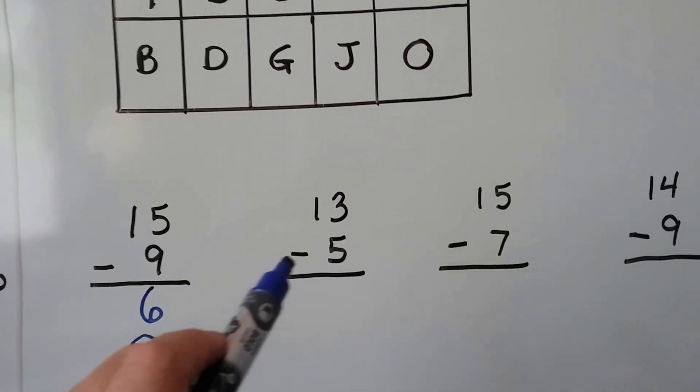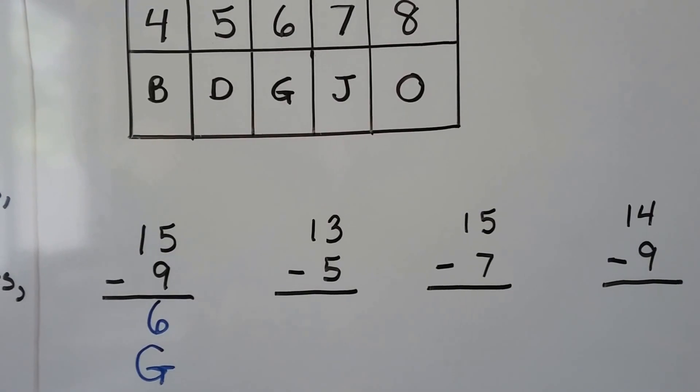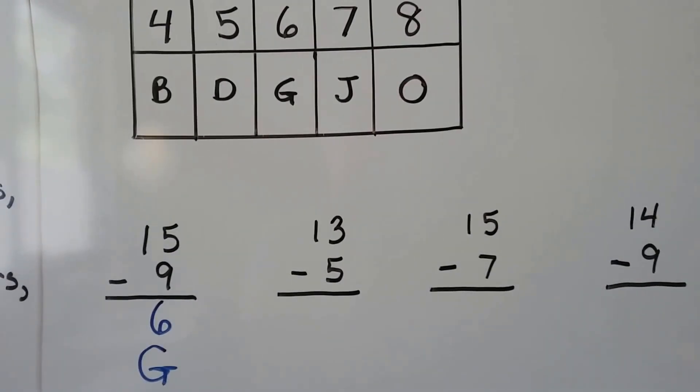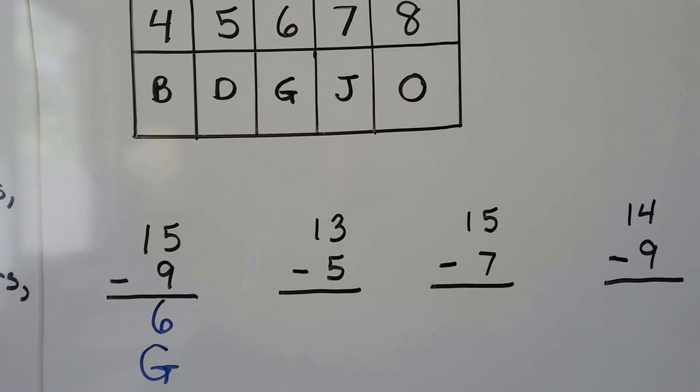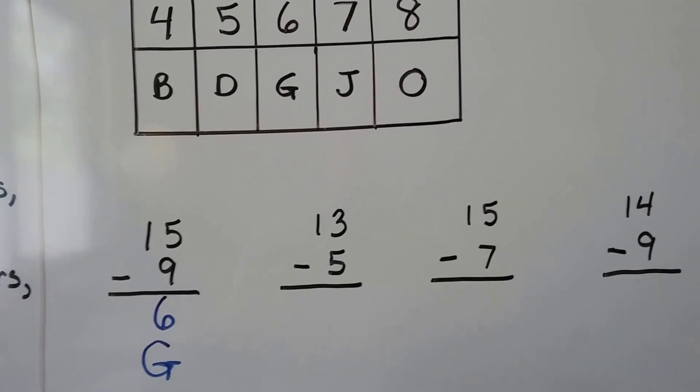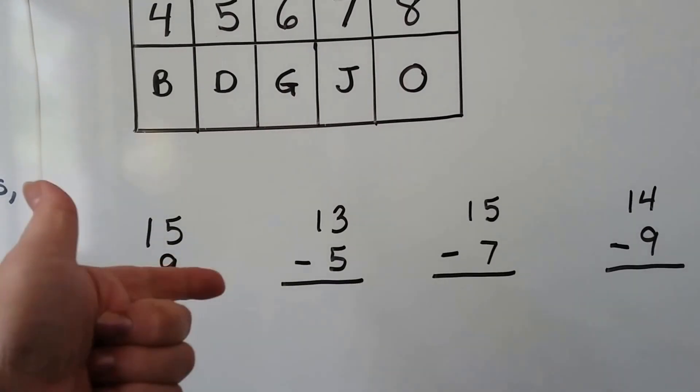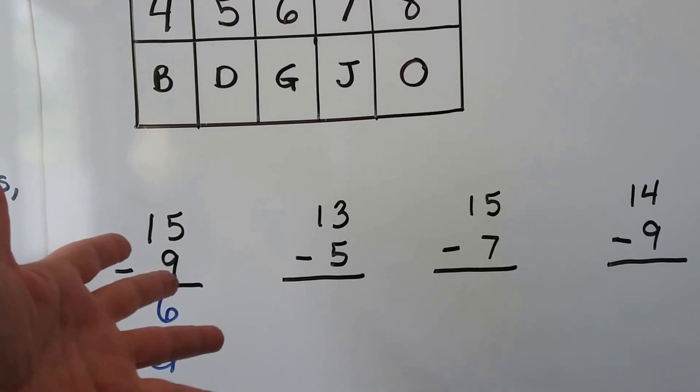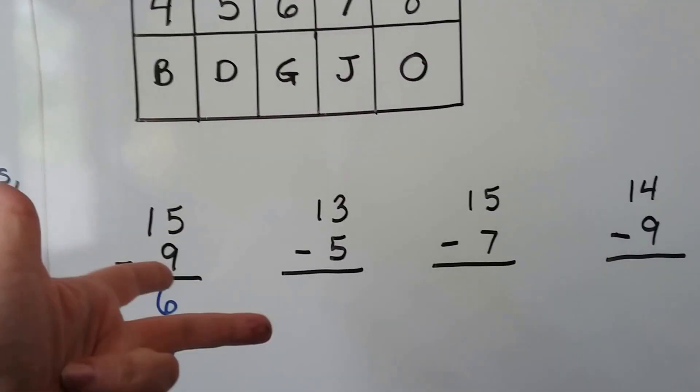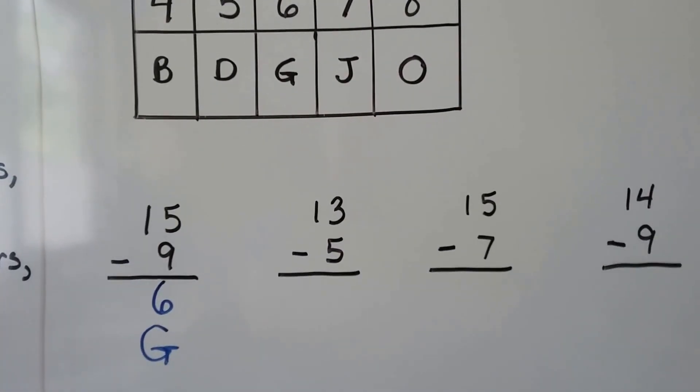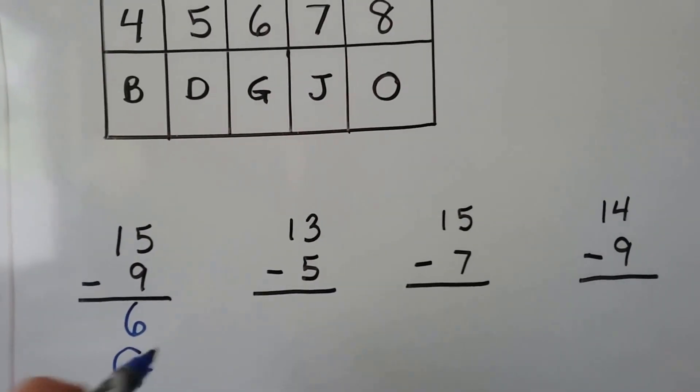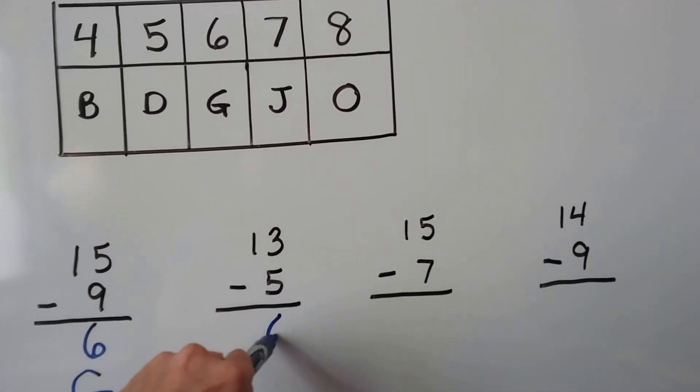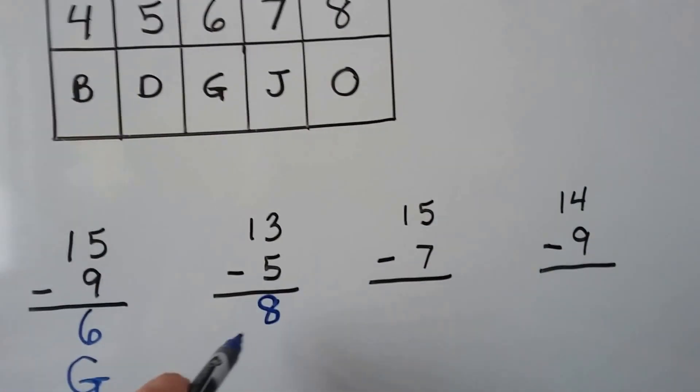Now we have 13 minus 5. We can count back or we can count up. Let's count back. 13, 12, 11, 10, 9, 8, 7, 6, 5. That was 8 fingers. 13 minus 5 is 8. We look on our code chart. 8 is an O.